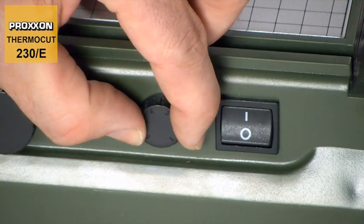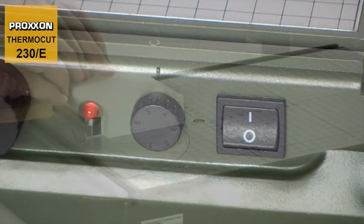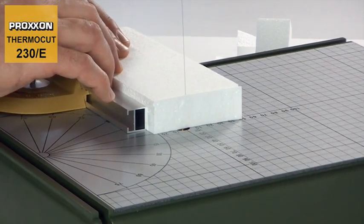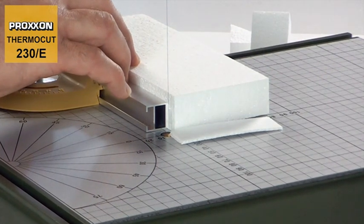The wire temperature can be controlled within the range from 100 to 200 degrees Celsius, meaning you can rapidly find the temperature best suited to each material and thickness, and the workpiece can then be cut with the application of moderate pressure.